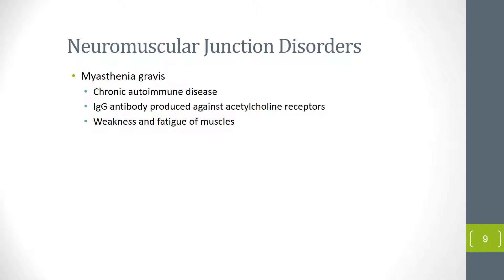As an immune disease, myasthenia gravis is caused by antibody-mediated destruction of acetylcholine receptors located in the neuromuscular junction. The exact mechanism is unknown but is believed to be related to abnormal T lymphocyte function. Most people with myasthenia gravis may also present with thymus abnormalities.